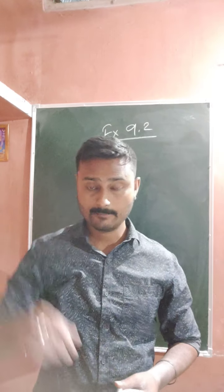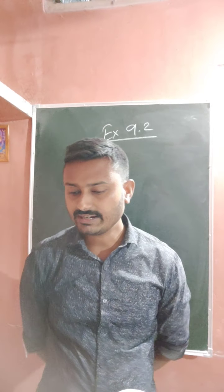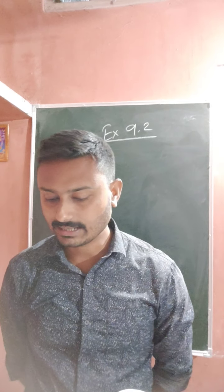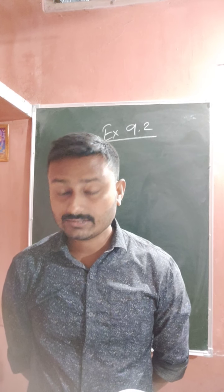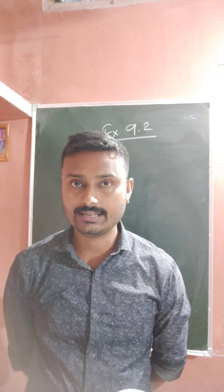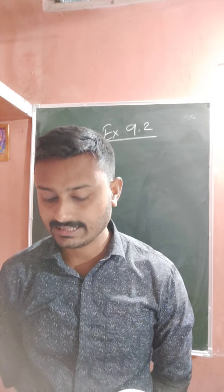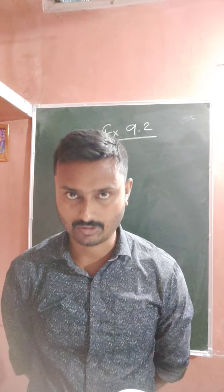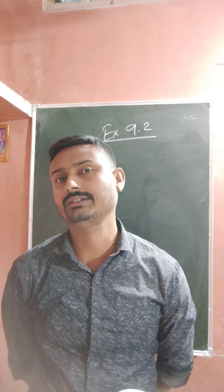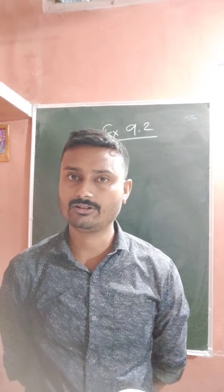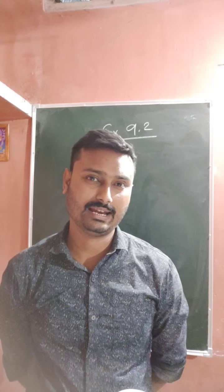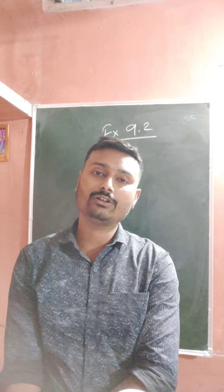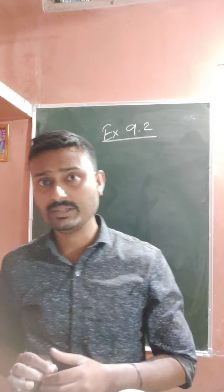Okay, so coming to question number six: determine if the following ratios form a proportion, and also write the middle terms and extreme terms if the ratios are in proportion. They are giving us some ratios and asking whether the ratios are in proportion or not. The method is: if the product of extreme terms equals the product of mean terms, then the given ratios will be in proportion.